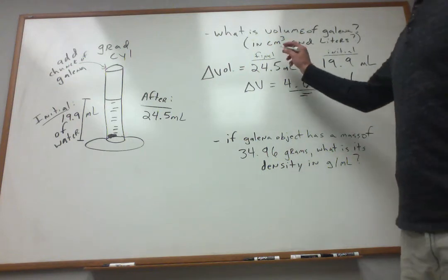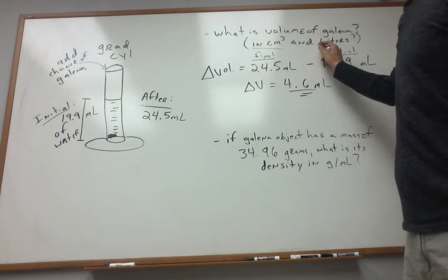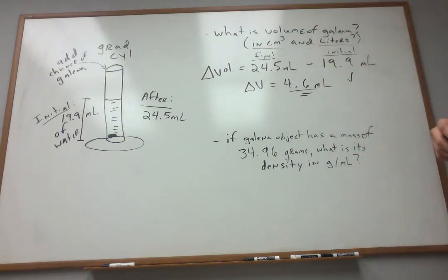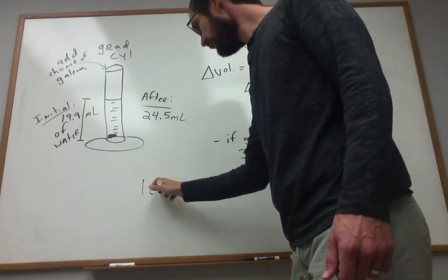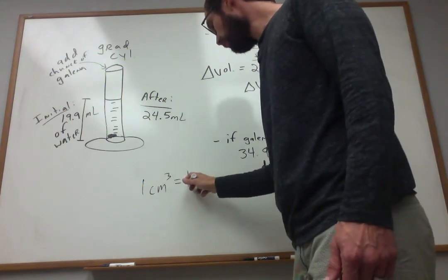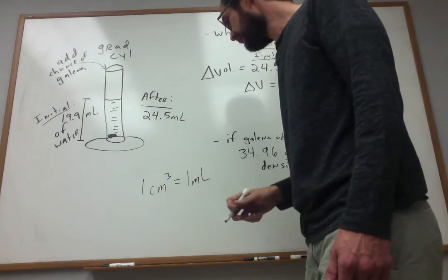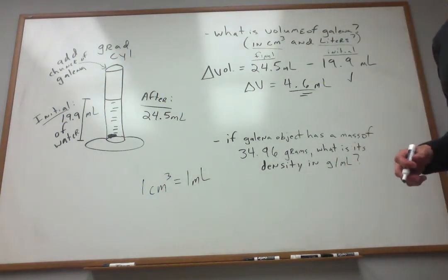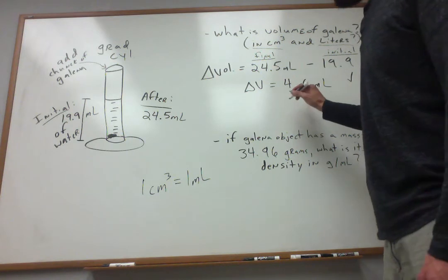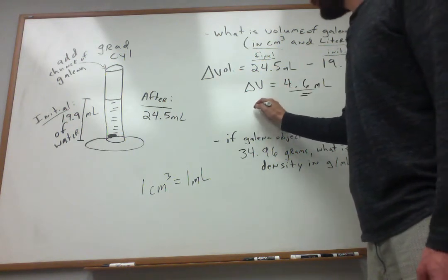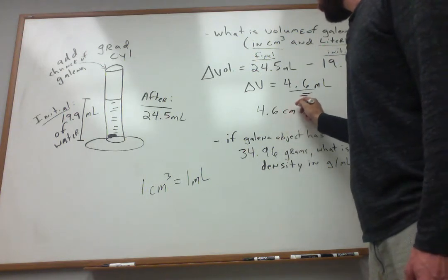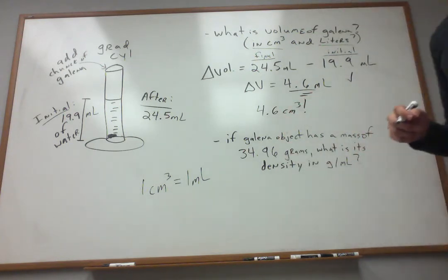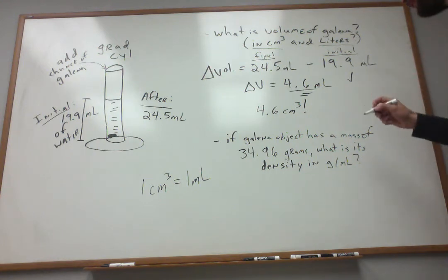Now, we're not quite done because we're asked what's the volume in cubic centimeters and also in liters. We've got to think about this a little bit. Remember in class the other day, I was trying to make the point that one cubic centimeter equals one milliliter. These are essentially the same volumes. So because I'm 4.6 milliliter, I'm also very confident in saying that this object is 4.6 cubic centimeter.